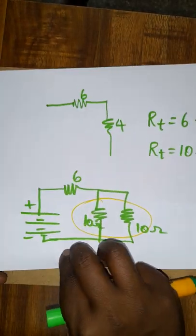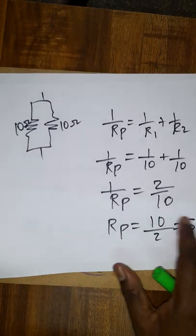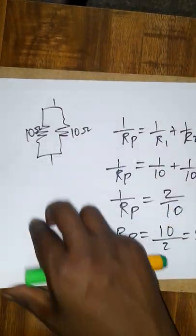10, 10 is in a parallel. 1 by 10 plus 1 by 10, 2 by 10. The answer for this is 5 ohms. So this together I got 5 ohms.